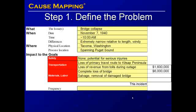The salvage and removal of the damaged bridge was valued at $350,000, and the construction of a replacement bridge valued at $11.2 million, making the total cost for this incident approximately $19 million. We can also capture the frequency — in this case, this was the first major suspension bridge collapse in the U.S.